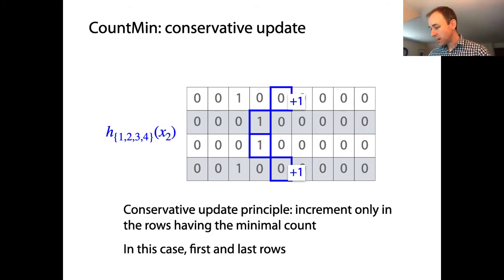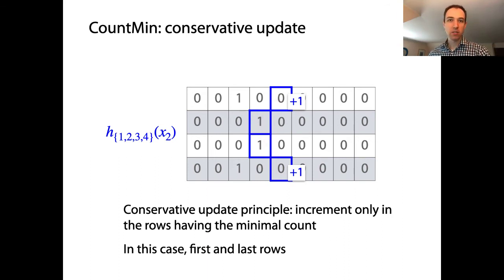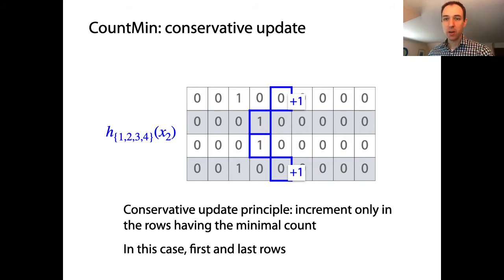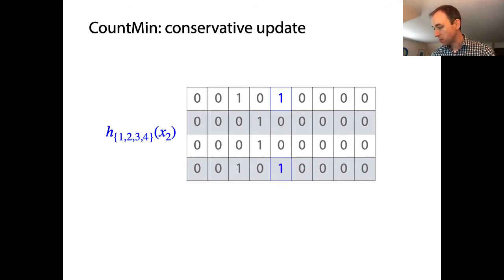Now x2 comes along and we apply the conservative update principle again: increment only in rows having the minimal count. Two of the rows that x2 maps to already have a count of 1 from x1's insertion, while two rows still have 0. The conservative strategy recognizes that incrementing the non-minimal rows is pointless — since we take the minimum at query time, we only need to increment the minimal rows, which are the first and last in this case.